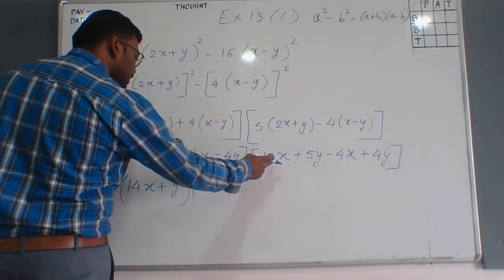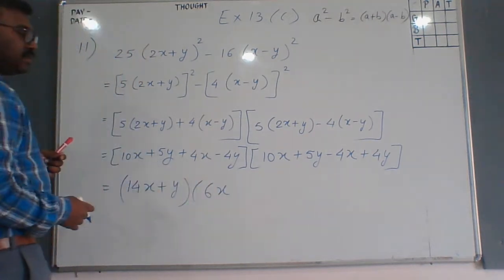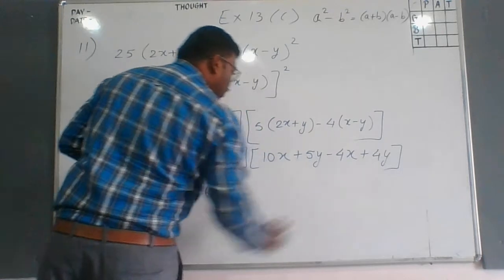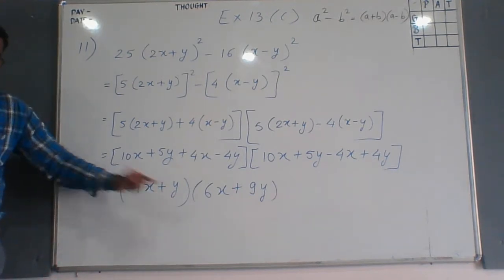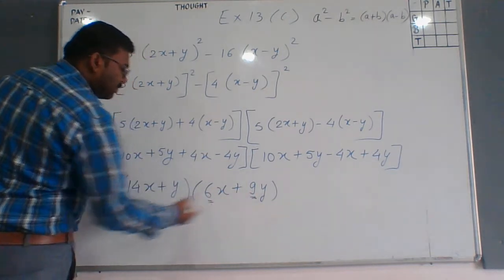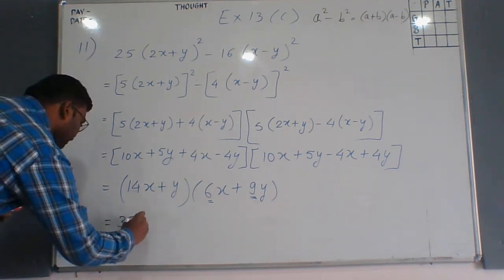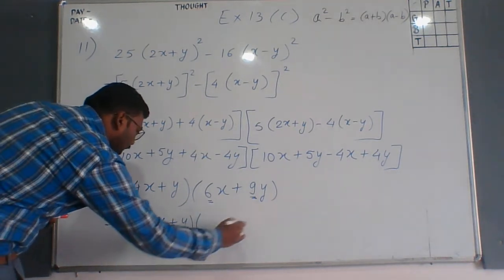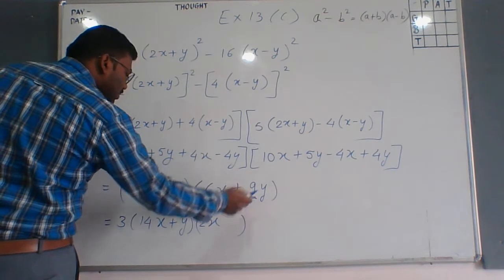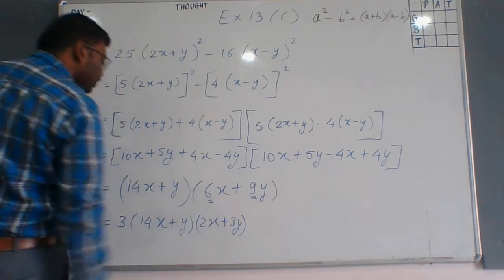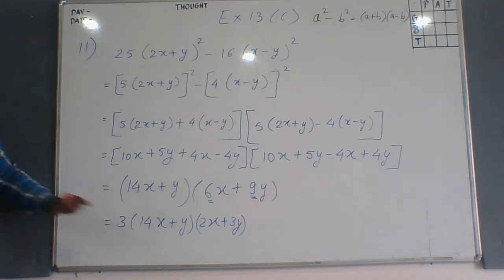Similarly in the next bracket: 10x minus 4x is 6x, and 5y plus 4y is 9y. Now from 6 and 9 we can take out 3 as common. So we write 3 outside, and inside the bracket it becomes (2x+3y). So the final answer is (14x+y) × 3(2x+3y).